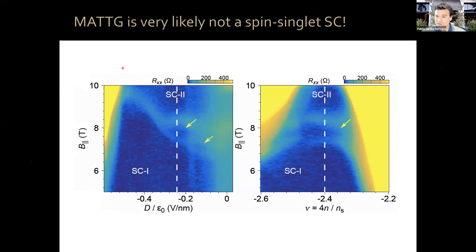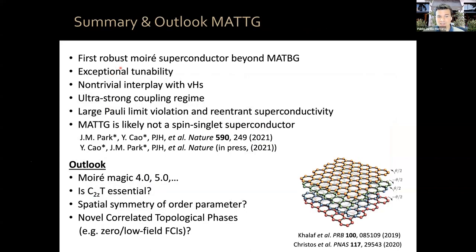All of this put together tells us that magic angle twisted trilayer graphene is very likely not a spin-singlet superconductor. It could be spin-triplet, or a combination of spin-triplet and singlet — called a spin-valley locked superconductor.